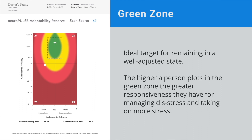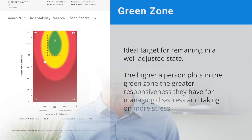The green zone, or zone 5, is considered the ideal target for remaining in a well-adjusted state. It is very attainable to get and stay in the green zone for those under chiropractic care. The higher a person plots in the green zone, the greater responsiveness they have for managing distress and taking on more eustress.